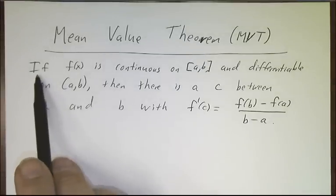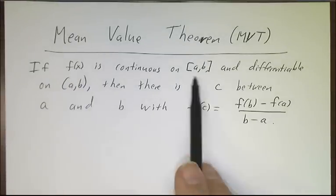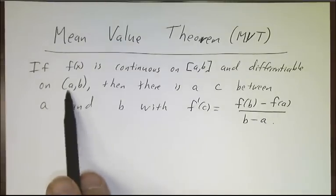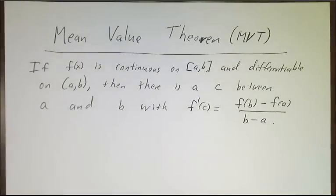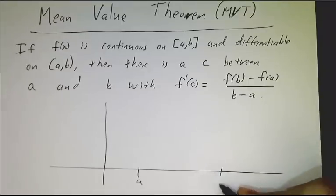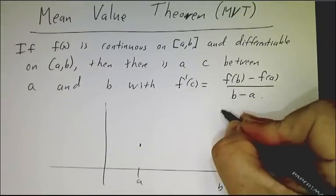Just like with Rolle's theorem, the mean value theorem assumes that you've got a function that's continuous on a closed interval and differentiable on the open interval. But it doesn't require that the function starts at zero and ends at zero, it just says any old function that starts somewhere and ends somewhere else.